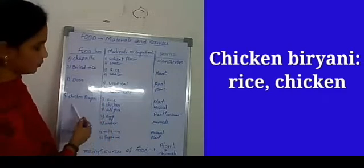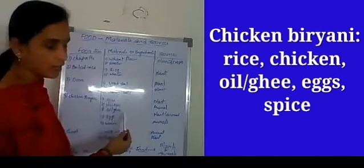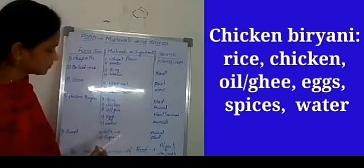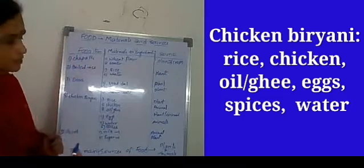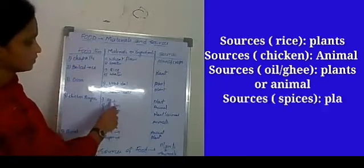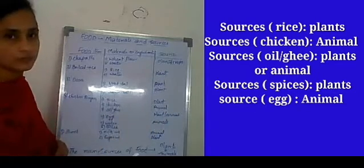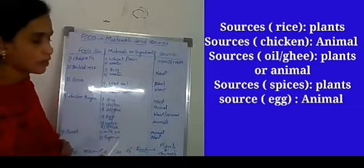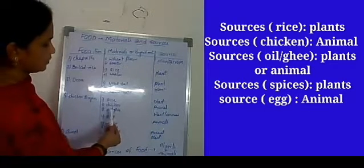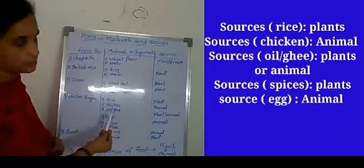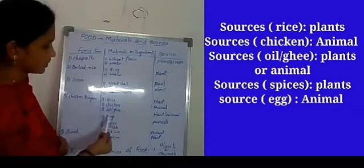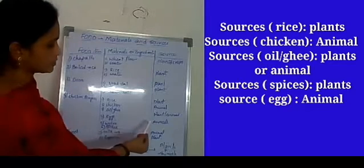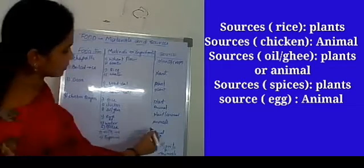The next food item is chicken biryani. The ingredients required are rice, chicken, oil or ghee, eggs, water, spices, etc. Rice is again a plant source. Chicken is hen meat, so it is an animal product. Oil — we can get oil from plants, like groundnut oil, sunflower oil — so it is a plant source. Ghee comes from milk, which is an animal product. Eggs we get from hens, so eggs are an animal source. Spices are again a plant source.